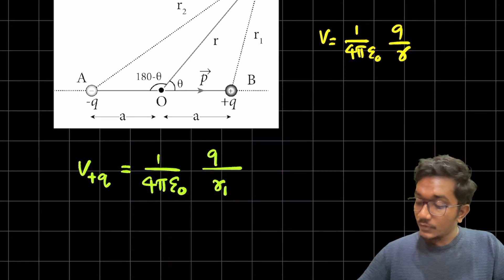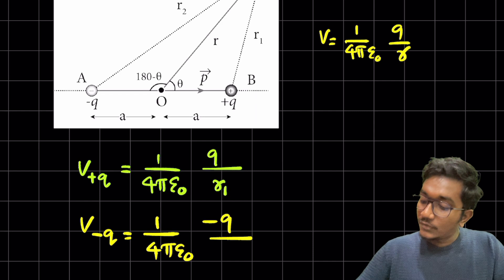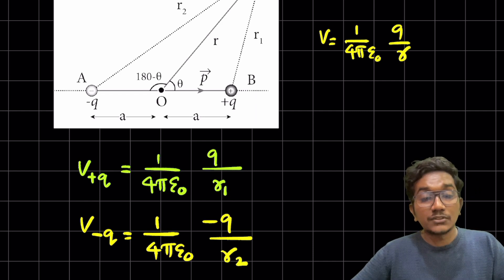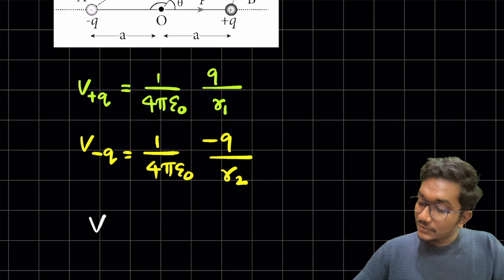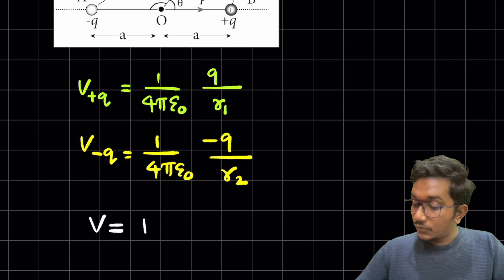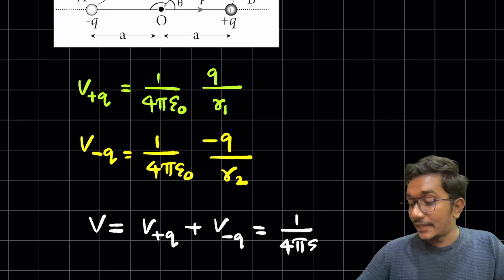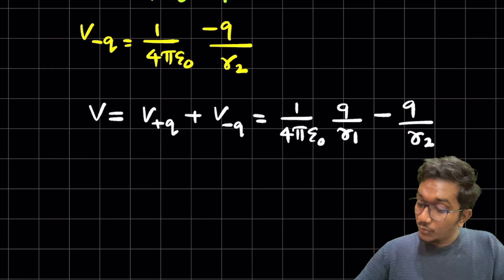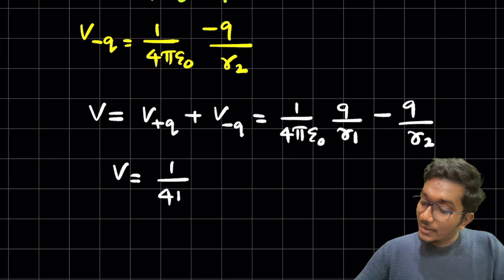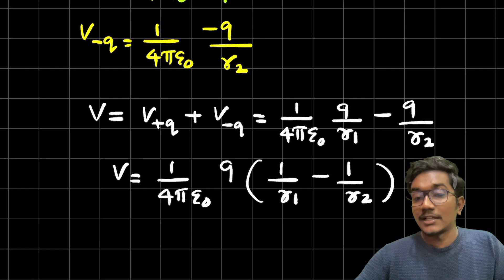And V minus q is equal to 1 divided by 4 pi epsilon naught, minus q divided by r2 — negative potential because the charge is negative. So the net potential V equals V plus q plus V minus q, giving V = (1/4πε₀) × [q/r1 − q/r2]. Taking q outside: V = (1/4πε₀) × q × (1/r1 − 1/r2). This is equation number 1.